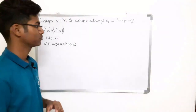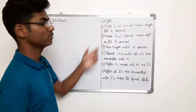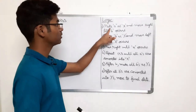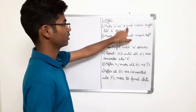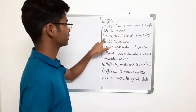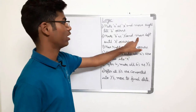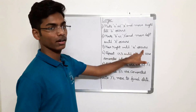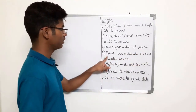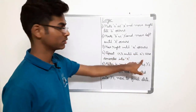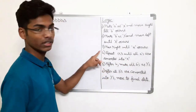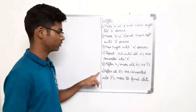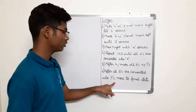This logic contains six steps. The first step is: make small 'a' as capital X and move right till 'b' occurs. Second step is: make 'b' as Y and move left until X occurs. Third step is: move right until 'a' occurs. The fourth step is: repeat these three steps until all the a's are converted into X. After the completion of step four, make all the b's as Y. The sixth step is: after all b's are converted into Y's, move towards the final state.